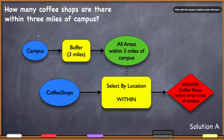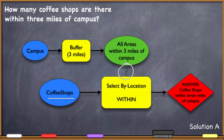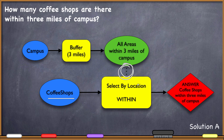I do have a dotted line connecting the buffer output to the select by location tool. I use a dashed or dotted line to show that something is a parameter of a function — auxiliary input — but not the main input. Here, we're selecting coffee shops by location, and the tool needs to know 'within what?' — and the answer is within that buffer area file. That's why it's connected with a dotted line: it's auxiliary information the tool needs.